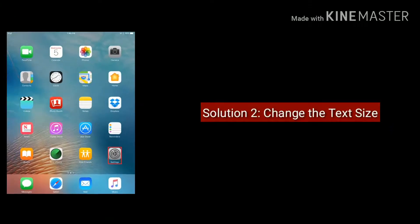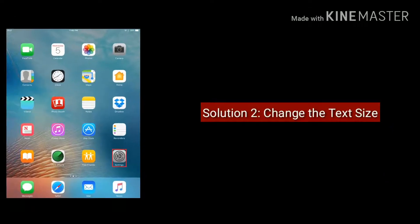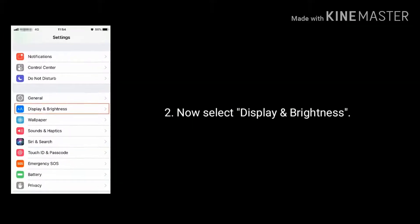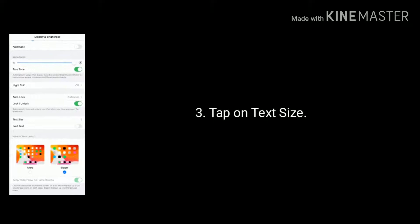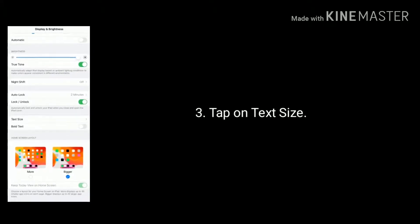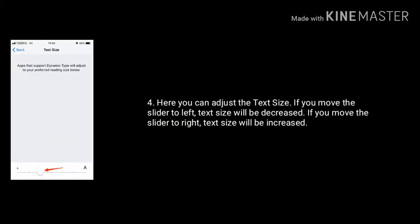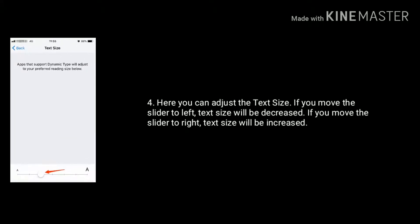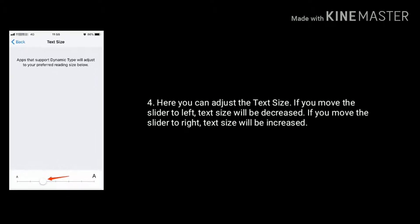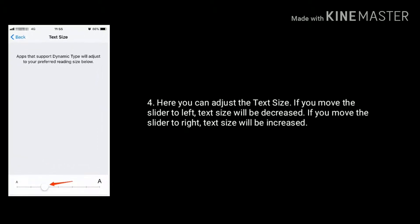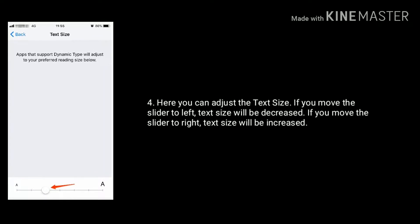Solution 2 is change the text size. Go to Settings and select Display and Brightness. Now tap on Text Size. Here you can adjust the text size. If you move the slider to the left, text size will be decreased. If you move the slider to the right, text size will be increased.